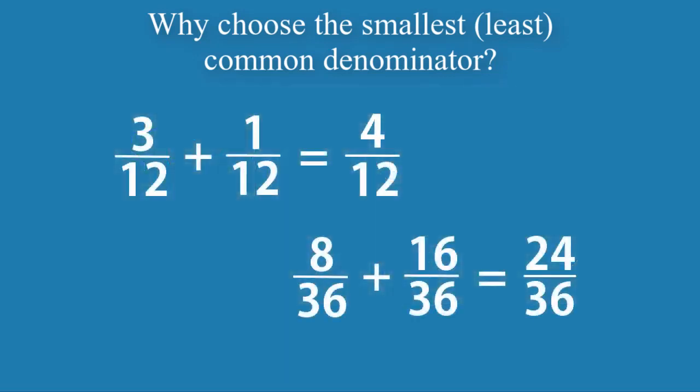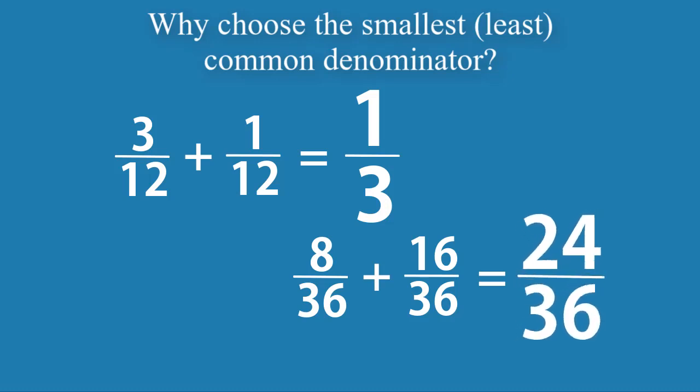It is quite easy to see that 4 and 12 can be reduced by 4. However, the larger the numbers, the more difficult reducing it will be.